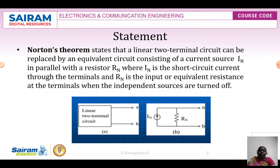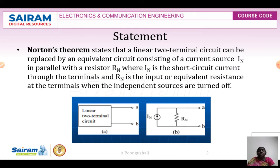Instead of open circuiting the load resistance, we are going to short circuit the load resistance. The current which flows through the load resistance is called the short circuit current. Norton's theorem states that a linear two-terminal network can be replaced by a single equivalent current source IN in parallel with resistance RN, where IN is the short circuit current through the terminals and RN is the equivalent Thevenin's resistance at the terminals when the independent sources are turned off.